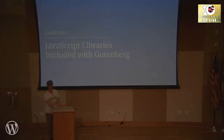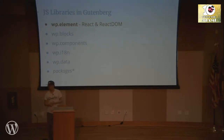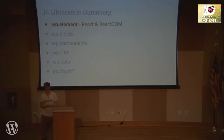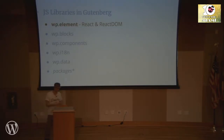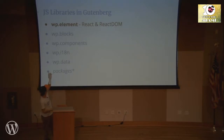Starting with our JavaScript libraries included with Gutenberg — the first one is wp.element. wp.element is a wrapper for React and React DOM. When WordPress abstracted React, it basically took the React library and instead of writing react.createElement, you now write wp.element.createElement. All the same names and functionality work exactly the same, except you refer to it as wp.element instead of React or ReactDOM.